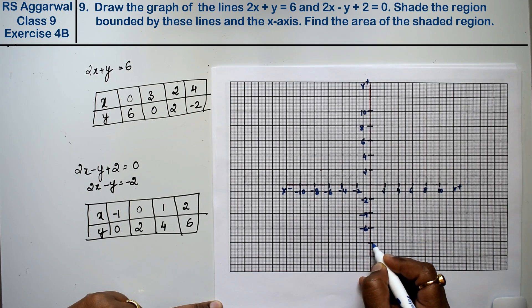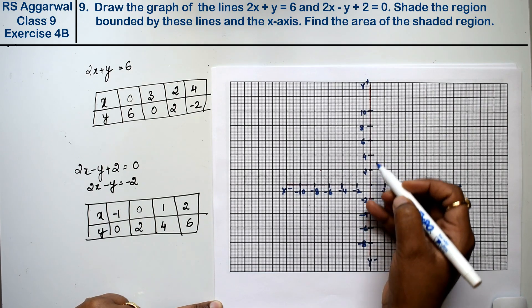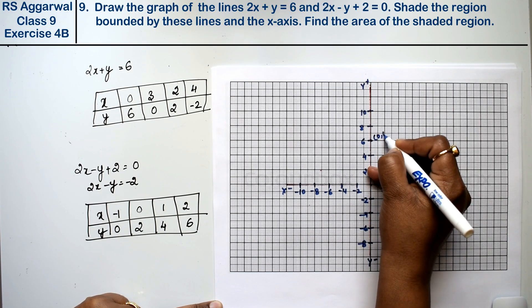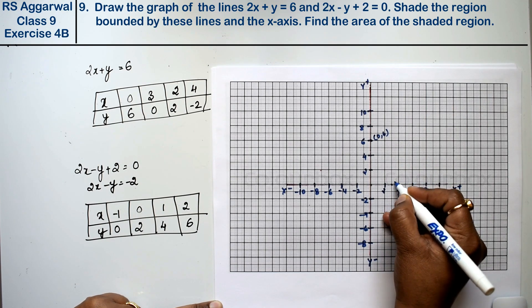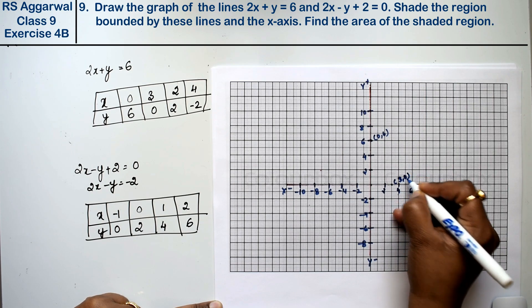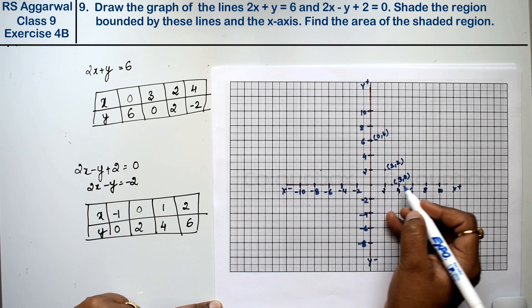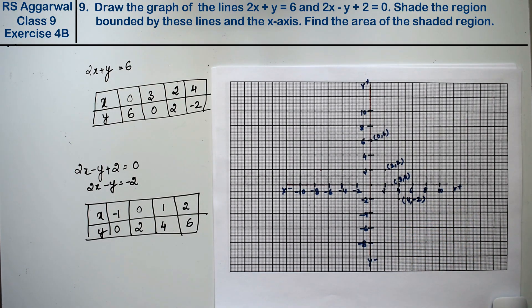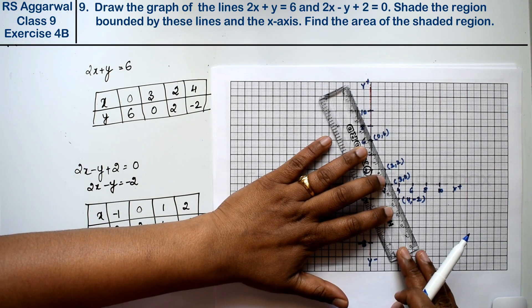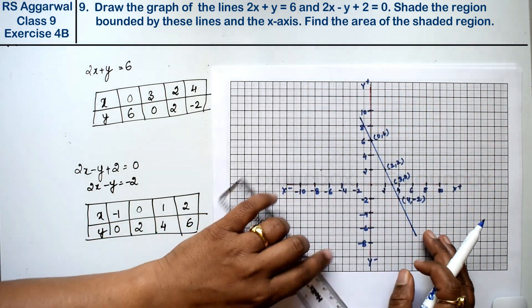Now see the first line. If x is 0, then the point is at y equals 6, so this point is 0 and 6. If x is 3, then y is 0, this is the point. Next is x equals 2 and y equals 2, that is 2 and 2. If x is 4 then y is minus 2. So this is 4 and minus 2. Join them.